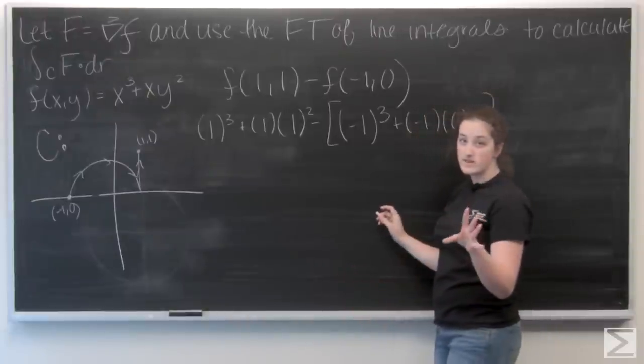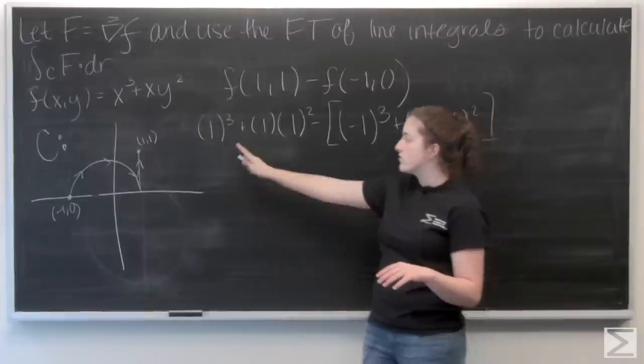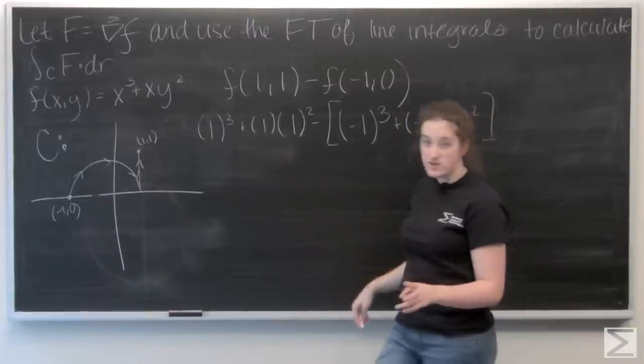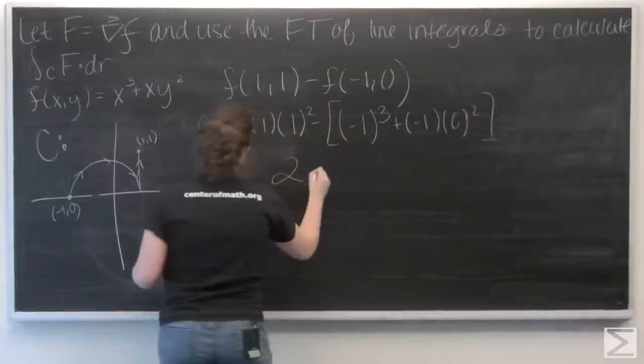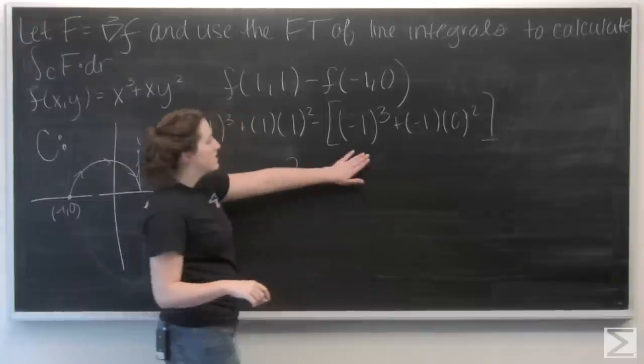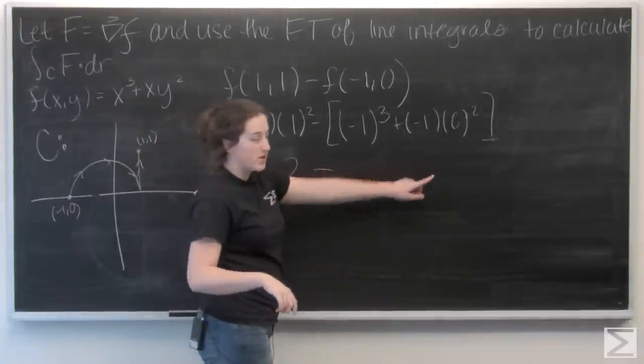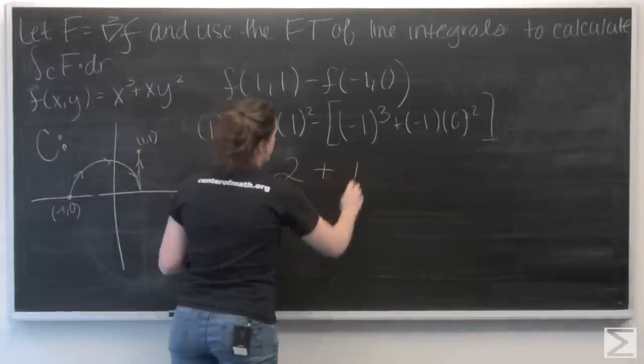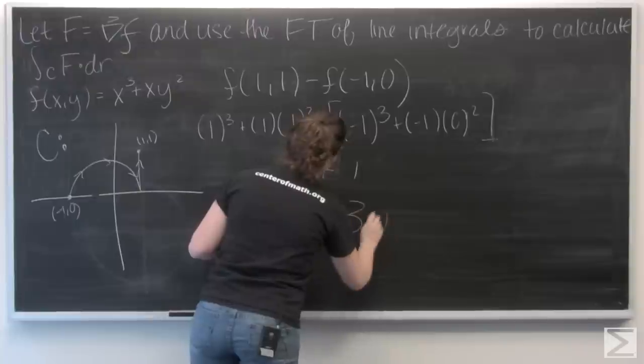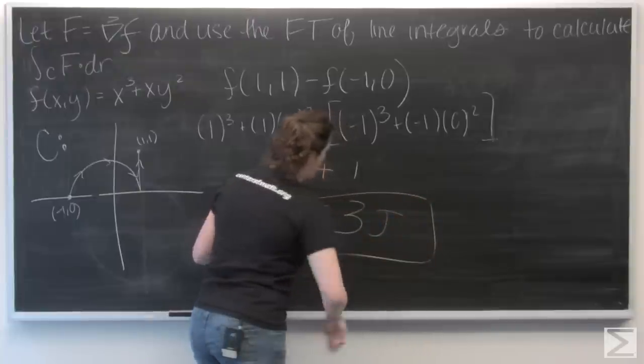And, let's go ahead and add these all up. So, I have 1 plus 1, which makes 2, minus negative 1 plus 0. So, that's like 2 plus 1.